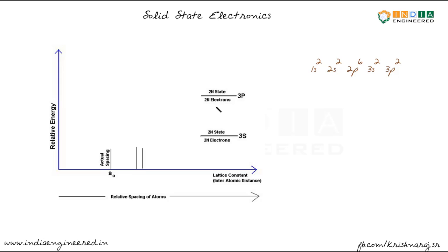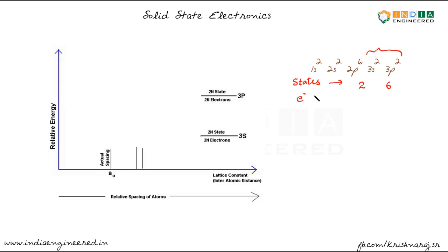We will consider the imaginary formation of a silicon crystal from silicon atoms. As n atoms come together to form the silicon crystal, in a single atom we have two states in the 3s subshell and six states in the 3p subshell. The number of electrons are two in the 3s subshell — which is completely occupied — and only two electrons in 3p, which has six states available.